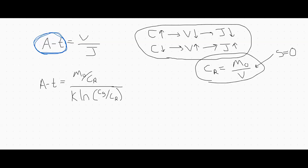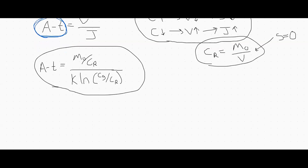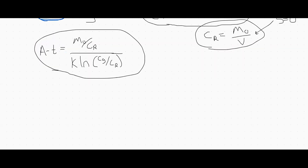So we have this expression: the area of your filter times the time for the unit operation equals the volume — written as the mass of your solute of interest over its concentration — divided by the flux as described by film theory. Now, a little throwback to calculus: how do we find the minimum of this equation? We're going to take the derivative with respect to the retentate concentration.